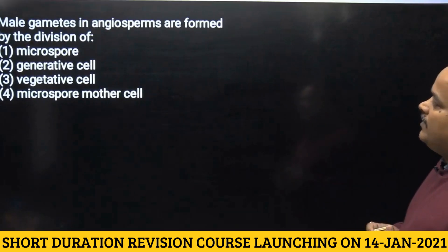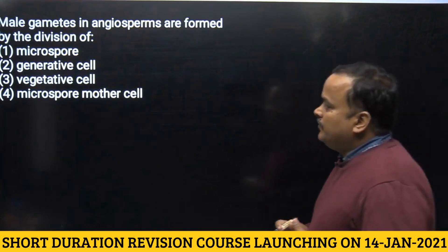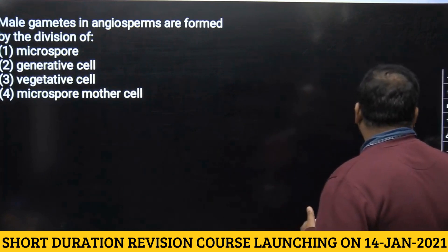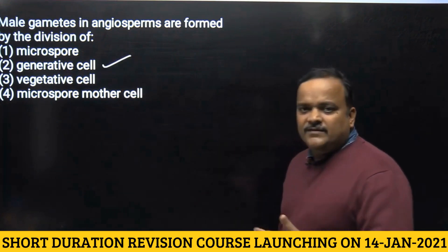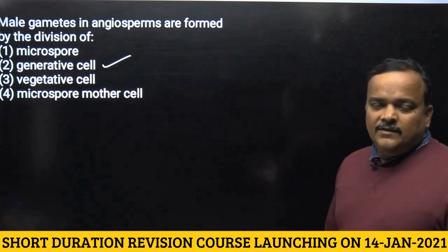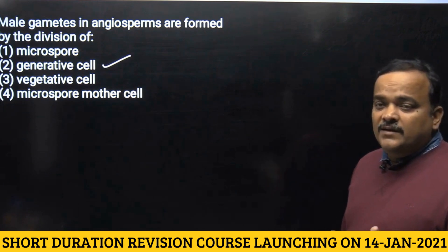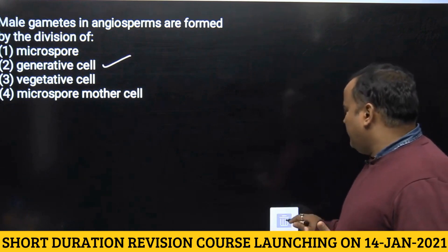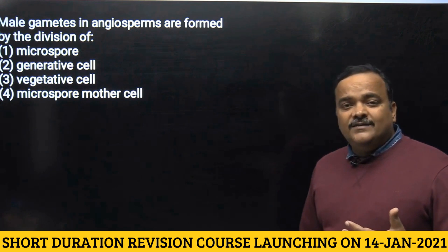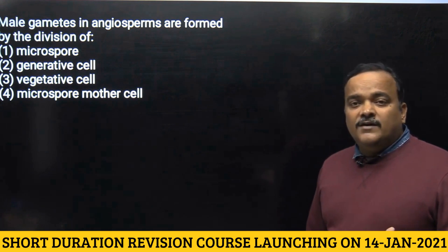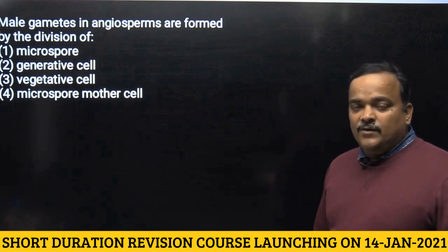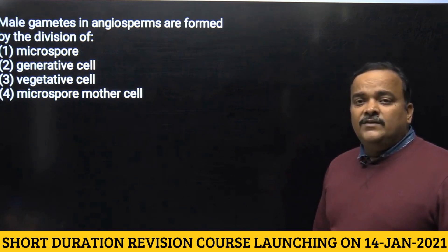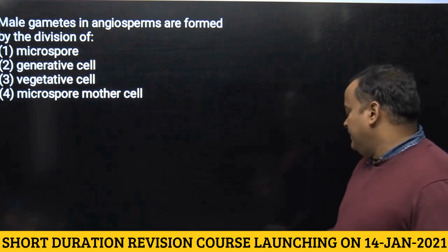The next question asks how male gametes in angiosperms are formed. They are formed as a result of division in the generative cell. The generative cell divides to form two male gametes. Importantly, in most cases pollen is released at the two-cell stage, so when pollen lands on the stigmatic surface after pollination, the generative cell then divides to form two male gametes.